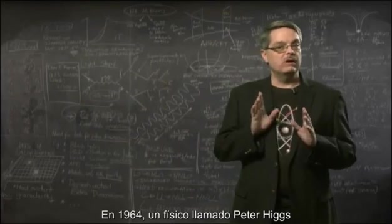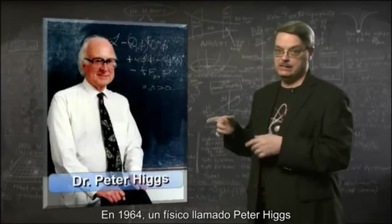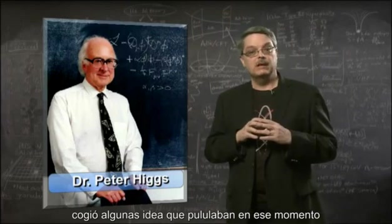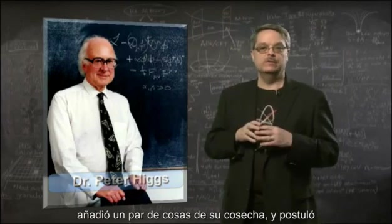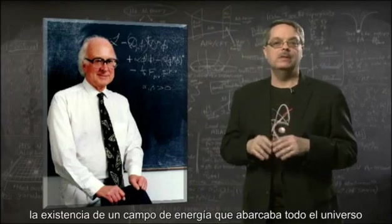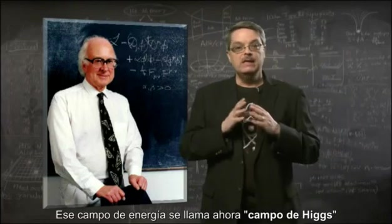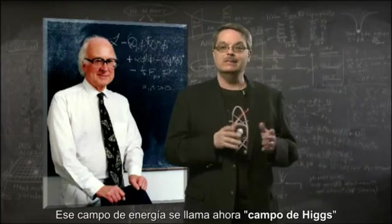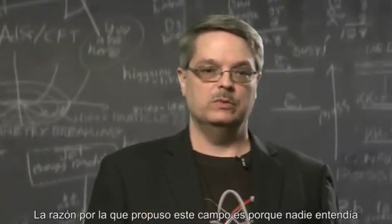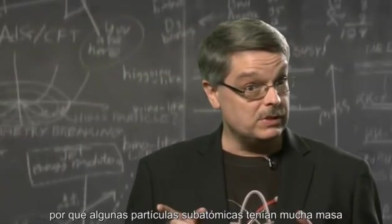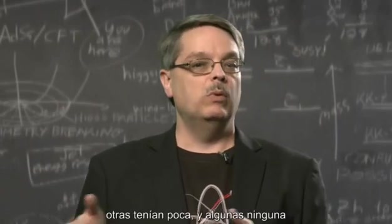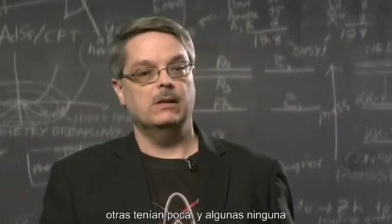In 1964, a physicist by the name of Peter Higgs took some ideas that were floating around at the time, added an insight or two of his own, and proposed that there was an energy field that permeated the entire universe. This energy field is now called the Higgs field. The reason he proposed this field was that nobody understood why some subatomic particles had a great deal of mass, while others had little, and some had none at all.